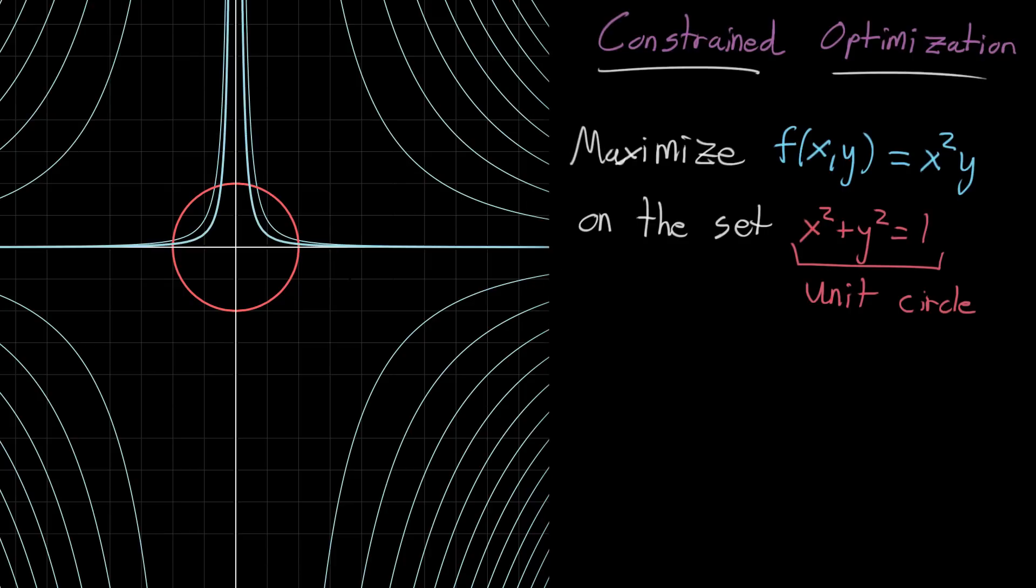So for example, one of them might represent all of the values of x and y where f of xy is equal to, you know, two. Right? So if you looked at all the values of x and y where this is true, you'd find yourself on one of these lines. And each line represents a different possible value for what this constant here actually is.